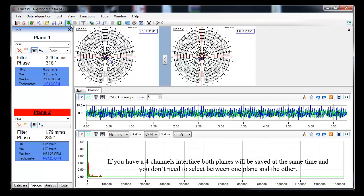If you have a 4 channels interface, both planes will be saved at the same time, and you don't need to select between one plane and the other.